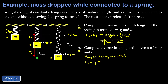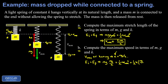The initial energy is purely gravitational potential energy: MG times the initial Y value, which is MG over K, giving M²G²/K. In the final state we have kinetic energy — one-half M V_max squared, which is what we're solving for — plus spring potential energy: one-half K X squared, where X equals MG over K, so we square that stretch length.